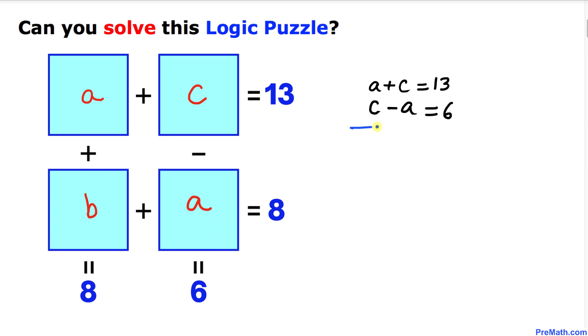Let me add these two equations. As you can see, this positive 'a' and negative 'a' cancel out. c plus c gives us 2c, and on the right hand side we get 19. Let me isolate c by dividing both sides by 2, so c turns out to be 9.5.